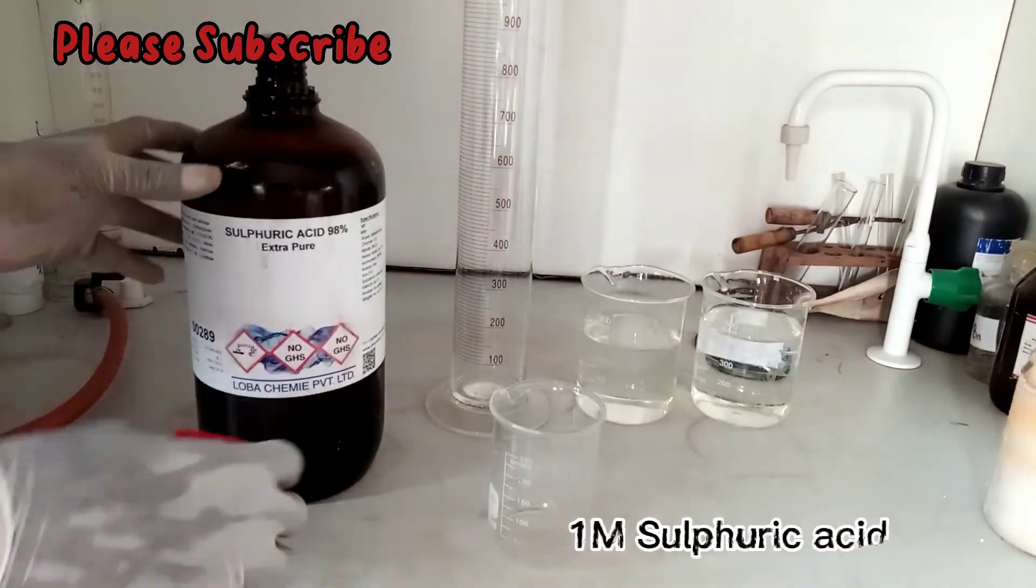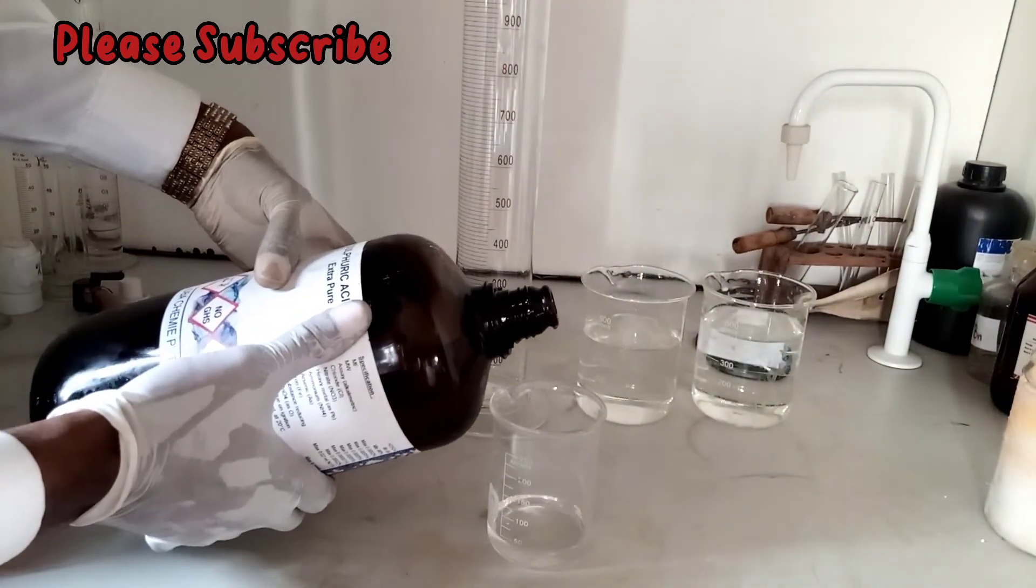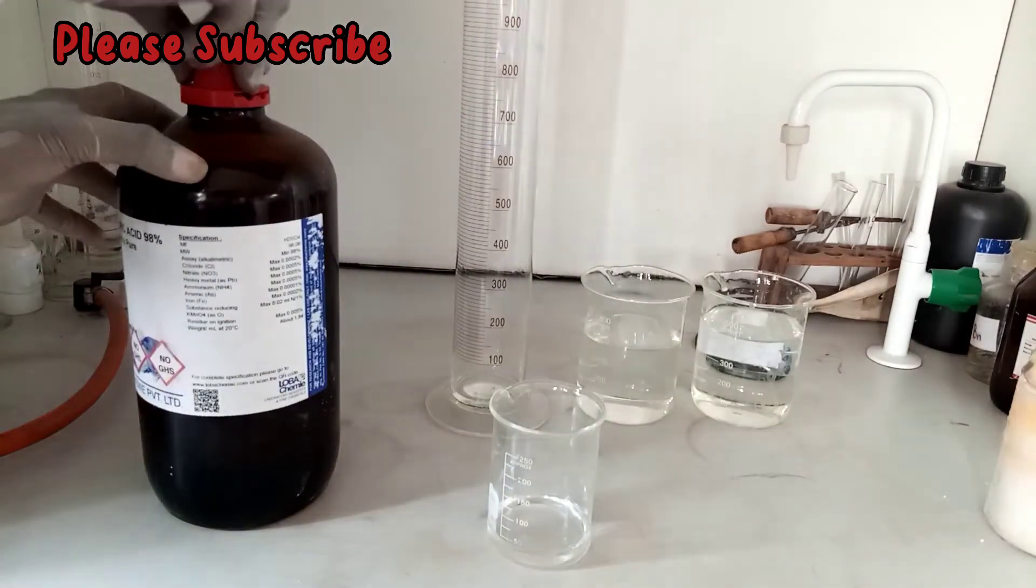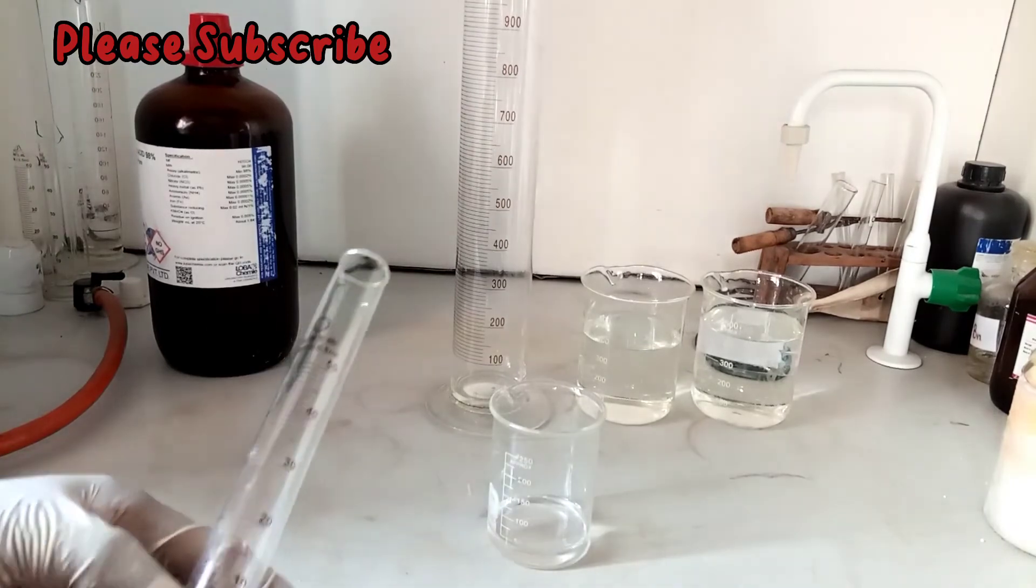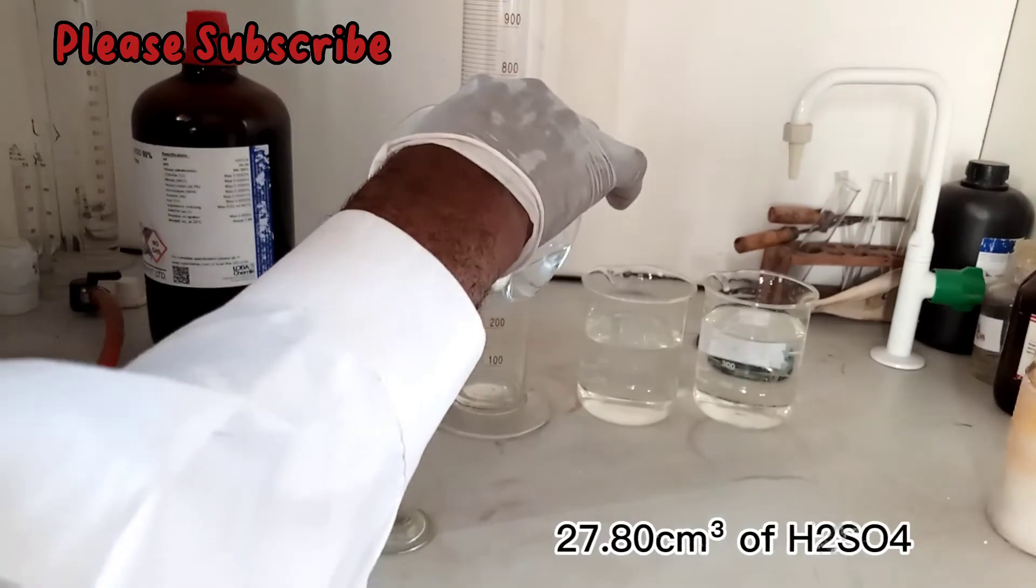To prepare one mole of sulfuric acid, you pour out little quantity from the stock solution that contains 18 molar concentration. Then here is a measuring cylinder. You measure out 27.8 cm³ of the acid.